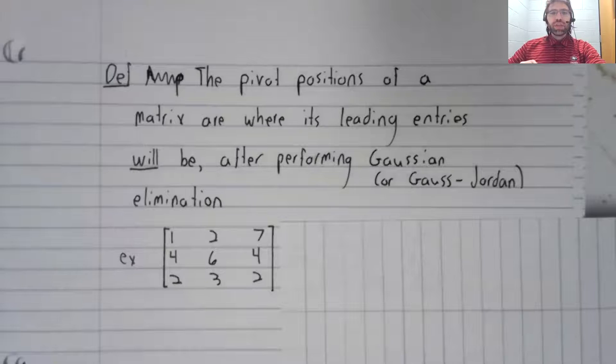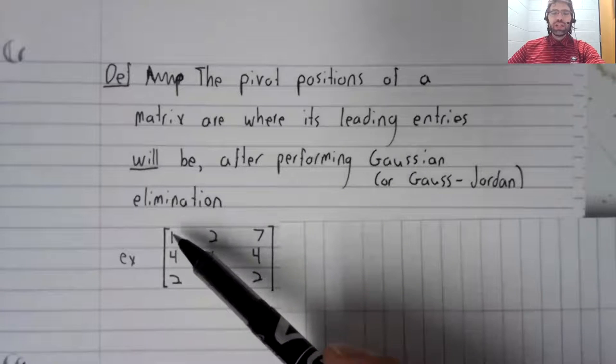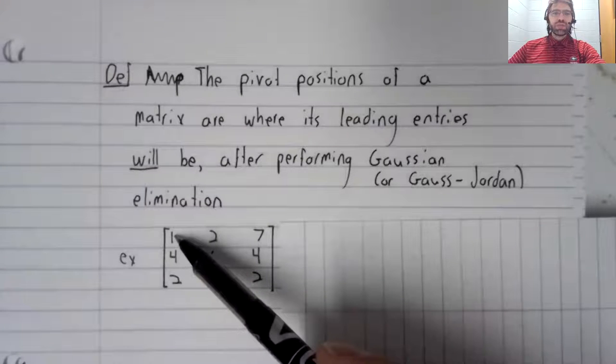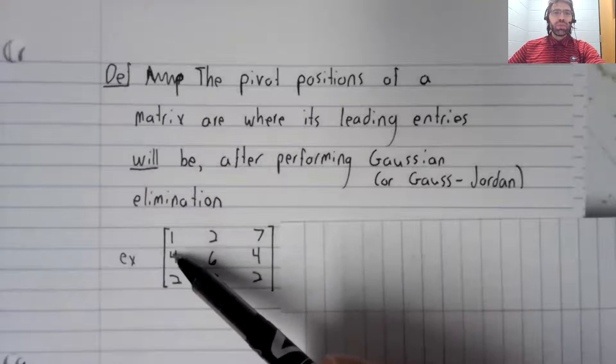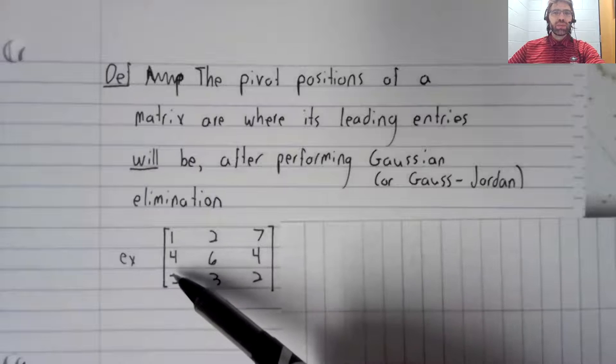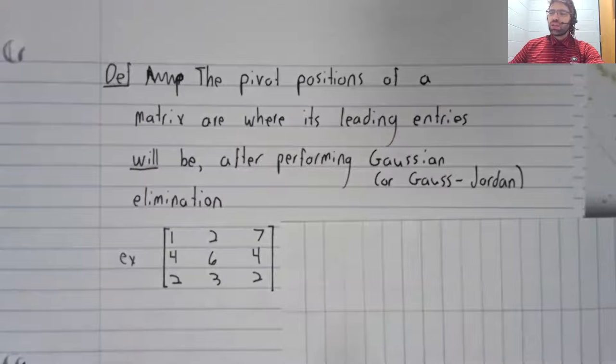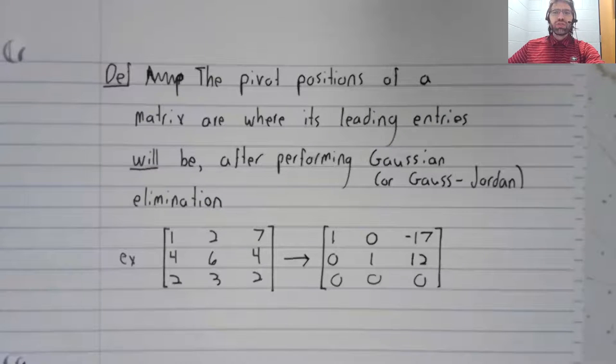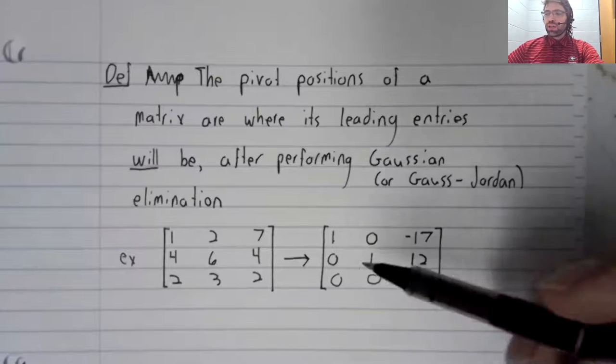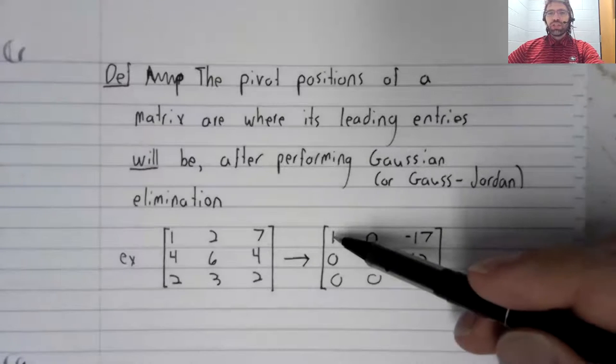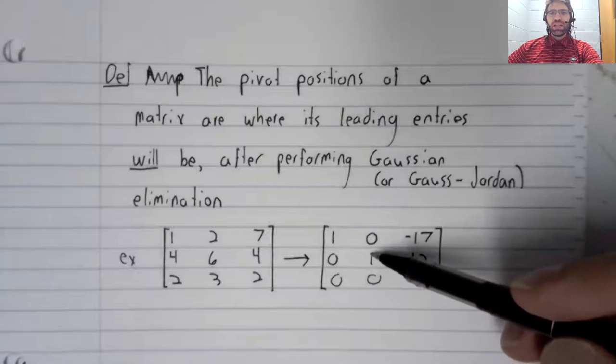let's look at this matrix. This matrix currently has three leading entries: one here, one here, and one here. If you perform Gaussian elimination, the leading entries change. Now the leading entries are here and here.